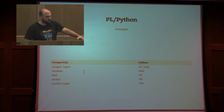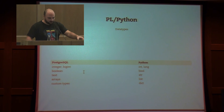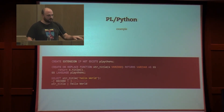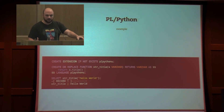A small table showing the mapping between Postgres and Python data types — on the right the Python types: int, long, bool, string, list, and dict; on the left the Postgres equivalents. To use it, create the PLPython extension, then create a new function — for example, strtitle — which returns the title-cased version of a string. The code inside is real Python code. After that, you can use the title function in your SQL queries.